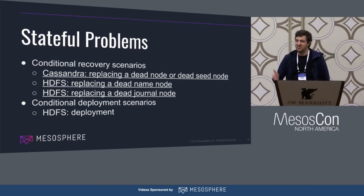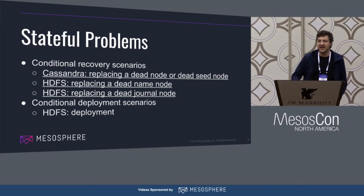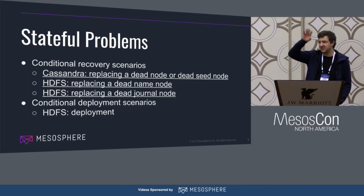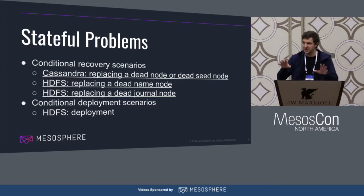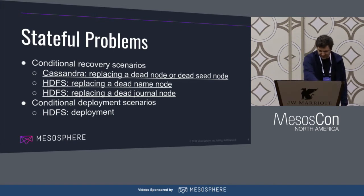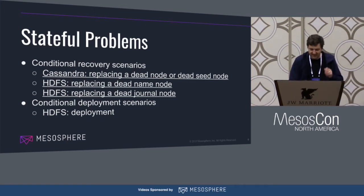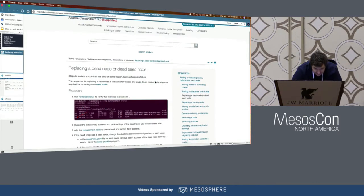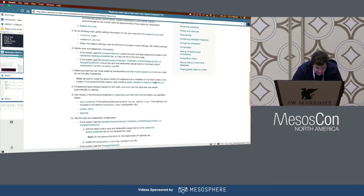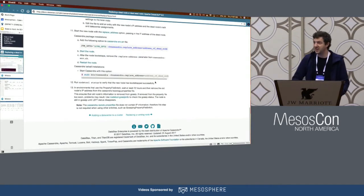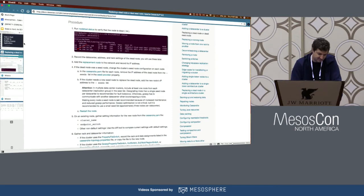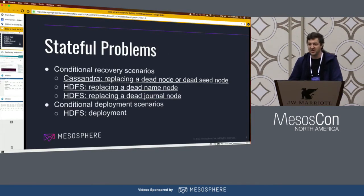HDFS comes up a lot — it's a motivating case for the SDK because it is so legacy and very difficult to deploy. If you go read HDFS's deployment docs, it's like 17 steps long and they assume you can SSH into a node and mutate state. For Cassandra, replacing a dead node or a seed node — there are 13 steps where you SSH into the node, read some file, and query it. We were able to automate this. Stateful things have this kind of problem where they assume you can go to the node and do something with it.